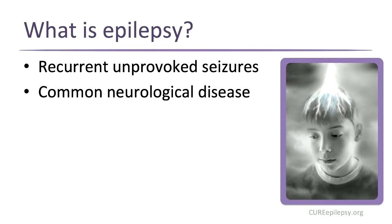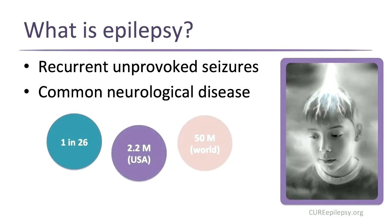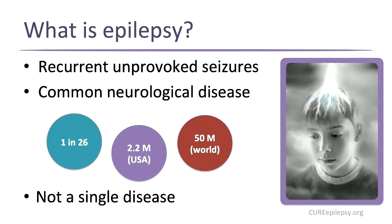It's a pretty common neurological disease. A report by the Institute of Medicine estimated that 1 in 26 individuals born today will be affected by epilepsy at some point in their lifetime. In the United States, there are over 2 million affected individuals, and worldwide there are about 50 million. Importantly, epilepsy is not a single disease — it's actually many, many different subtypes.